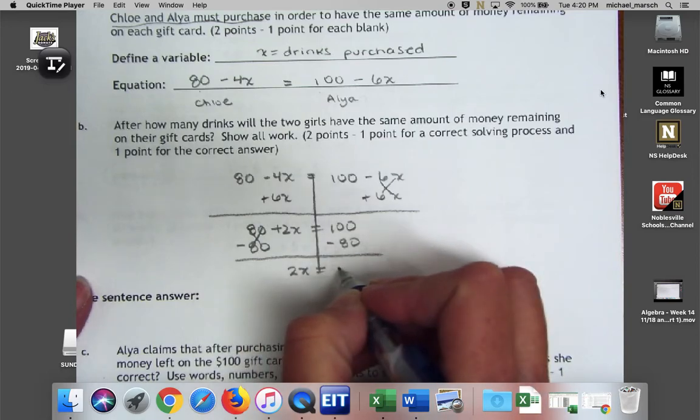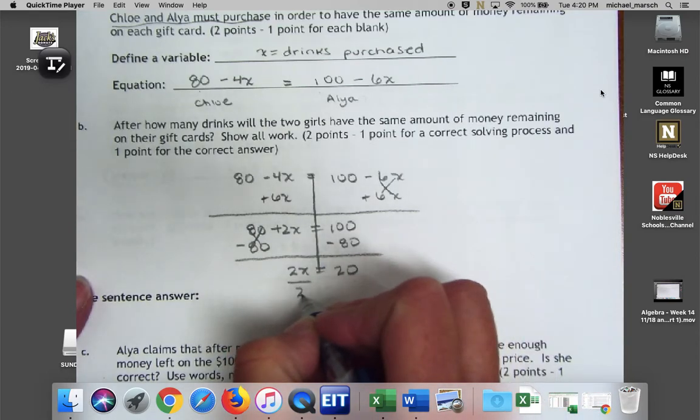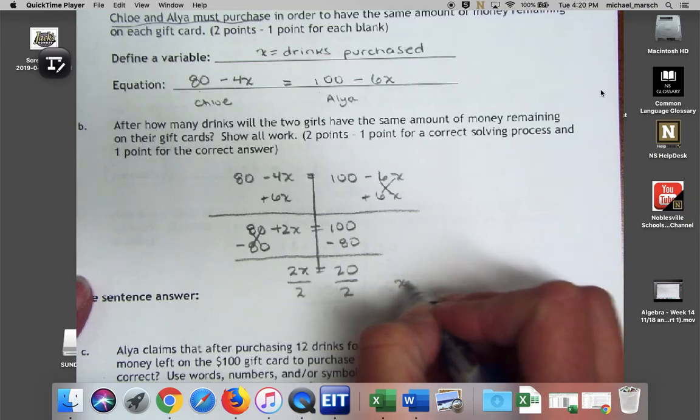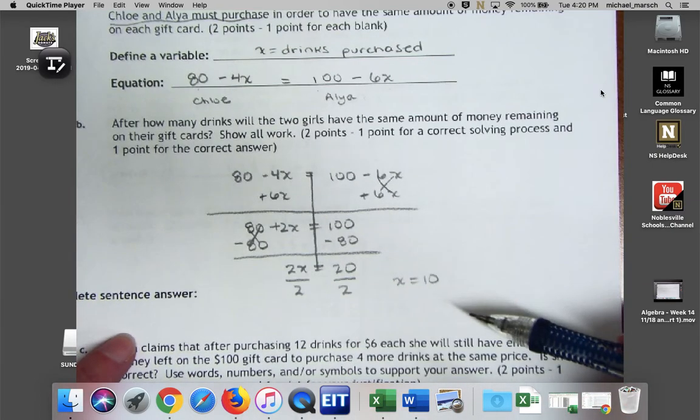I bet you guys thought eventually I'd stop saying two-stepper. Nope, I say it every time. So now I have 2x = 20. Divide by 2, I get x = 10.